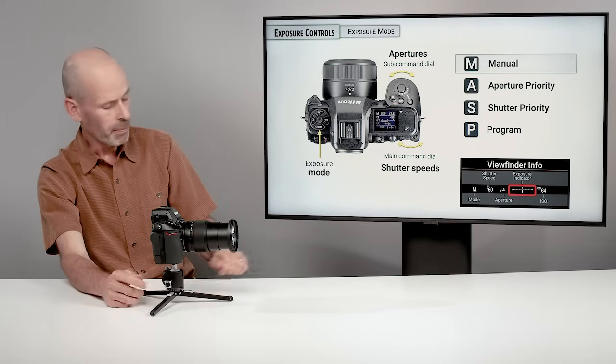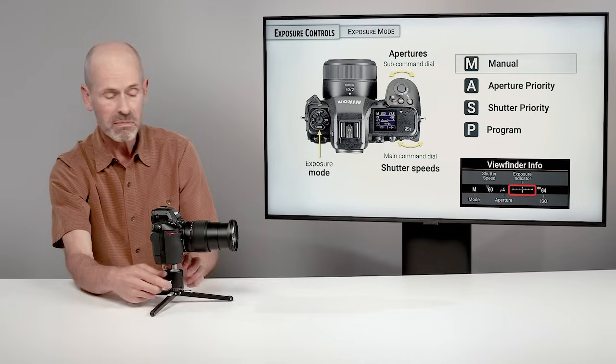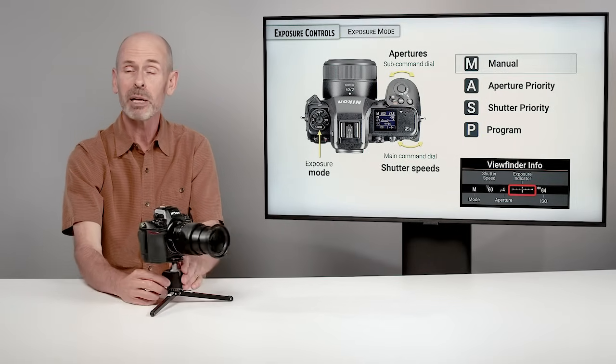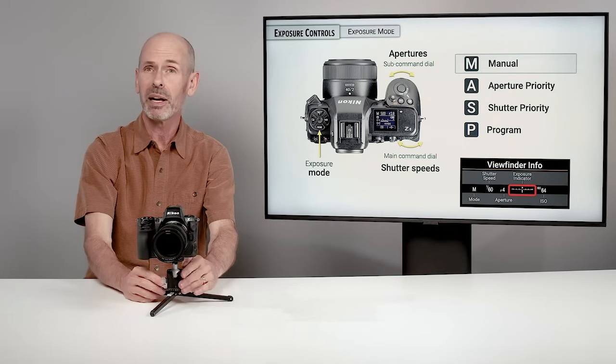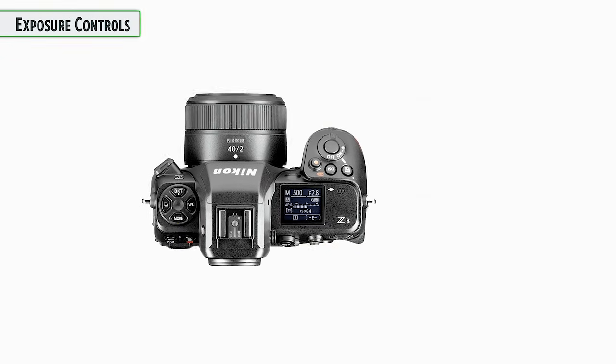I might adjust a third or two-thirds of a stop brighter because this is a brighter-than-average subject. The zero on the exposure indicator is simply a recommendation — a really good starting point — but you can do better by reading whether your subject is brighter or darker than average and dialing that in. Those are our four exposure modes.